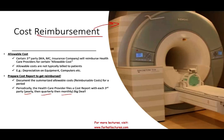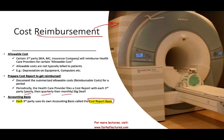The question is: when we prepare this cost report, what accounting basis do we use? Well, each third party uses its own accounting basis called the cost report basis. Simply put, if you're going to be dealing with Blue Cross or Blue Shield, each one of them is going to have a different accounting basis. Therefore, your cost report will have to comply with this.